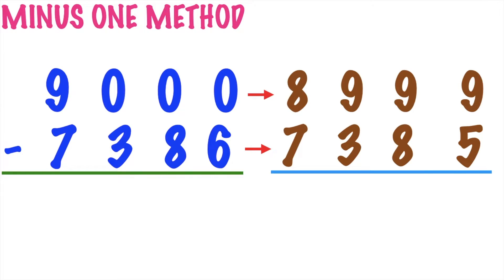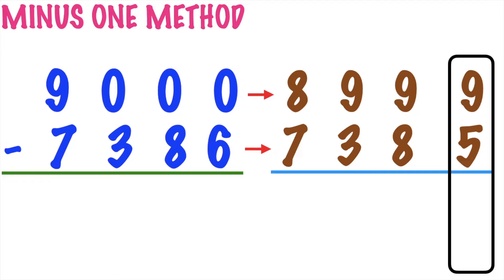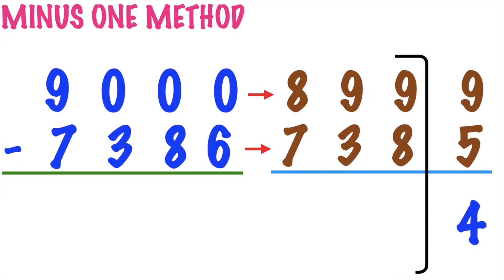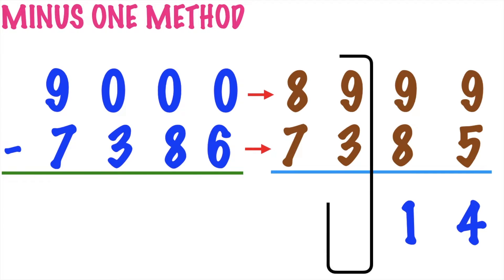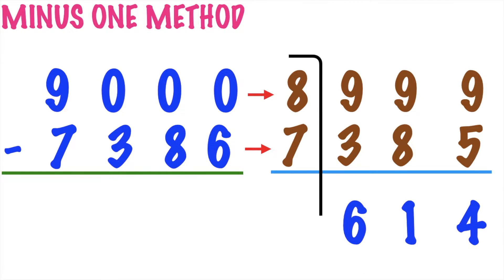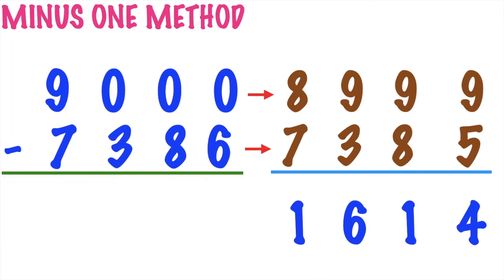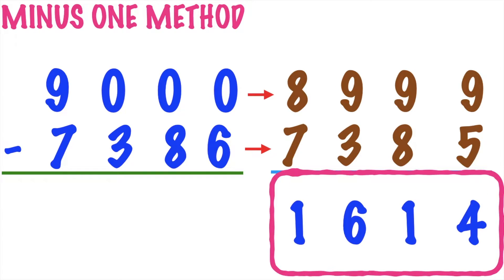Then 7,386 minus 1 is equal to 7,385. We can now subtract them. Let's start from the ones place. 9 minus 5 equals 4. Then 9 minus 8 equals 1. Then 9 minus 3 equals? Very good, it's 6. Then lastly, 8 minus 7 equals? Fantastic, it's 1. So the difference is 1,640.